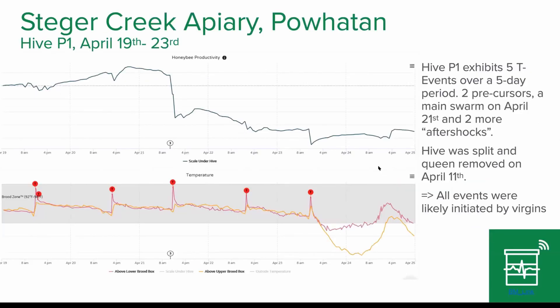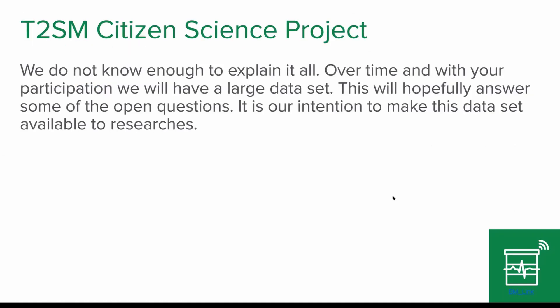Let's go back to the T2. Here is another example of a hive that had two precursors to the swarm — essentially two days in a row I had a warning, and then there was a swarm. Then we had two aftershocks. All these events were likely initiated by virgins. If you have a hive swarming, you have a lot of swarm cells, and sometimes the timing is a little off. The new queens start to emerge and create havoc in the hive, and you get patterns like this. We don't know enough to explain it all, but over time with your participation as beekeepers, we'll have a large dataset and hopefully be able to answer most of these open questions.